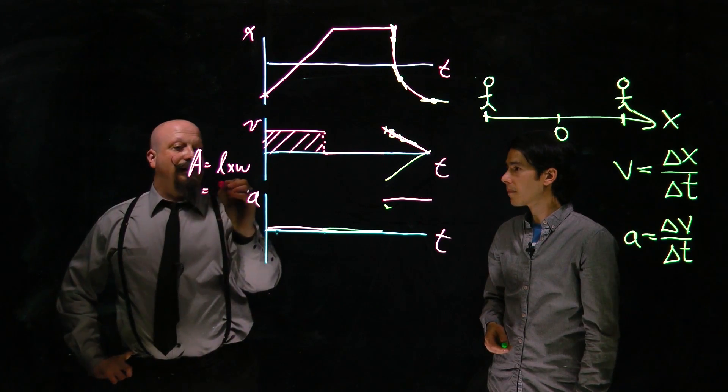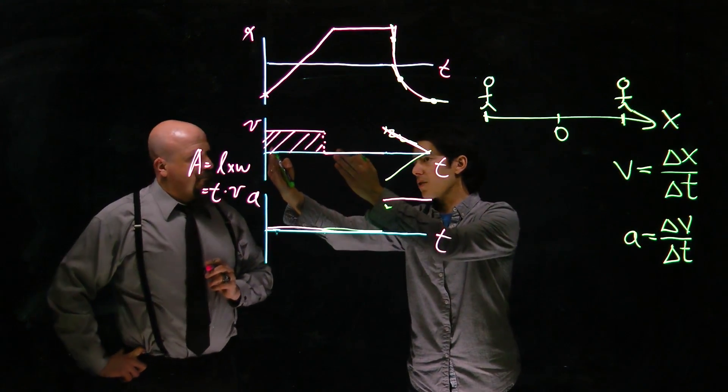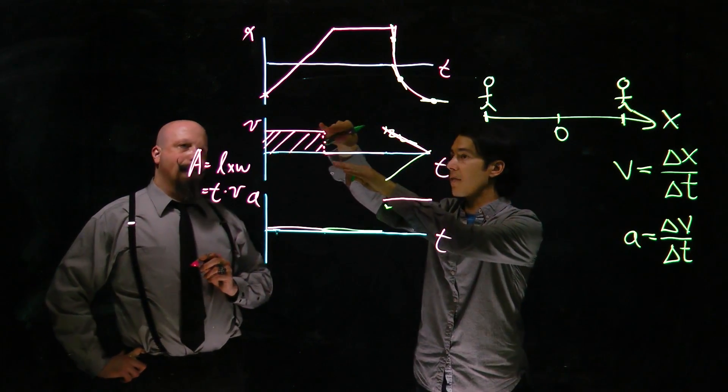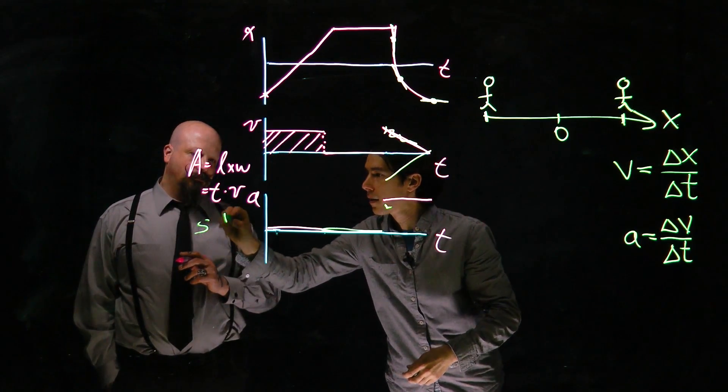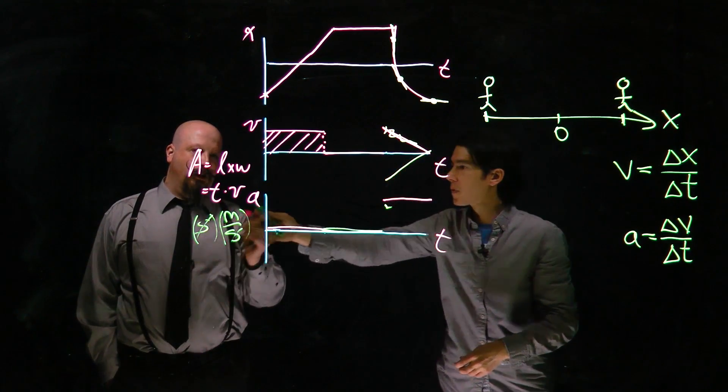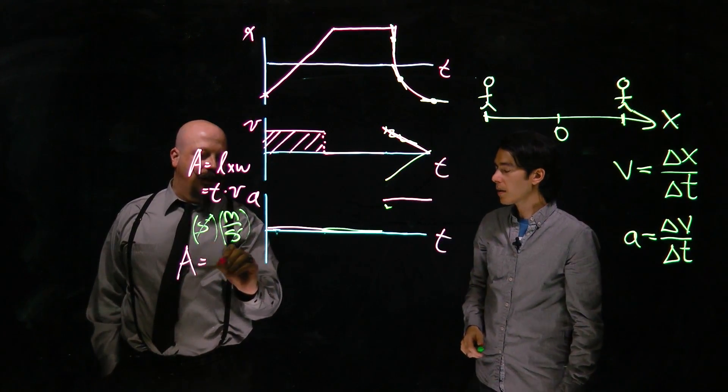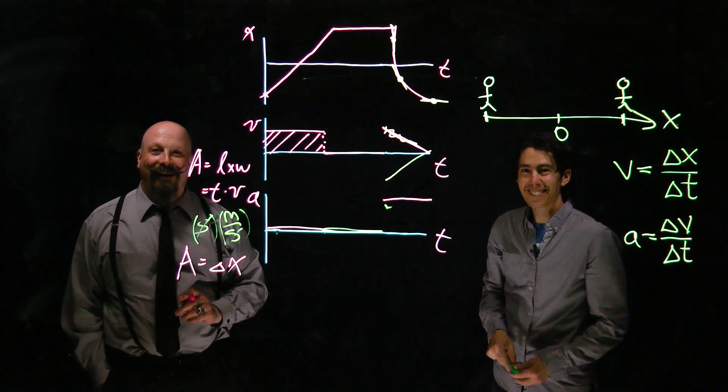And in this case, the length of it is time. The width is the velocity. Each of these quantities has units attached to it. Seconds, if we're looking at SI units, and velocity is meters per second. When you multiply meters per second times seconds, you end up with meters. So the area in the end just gives us the displacement.